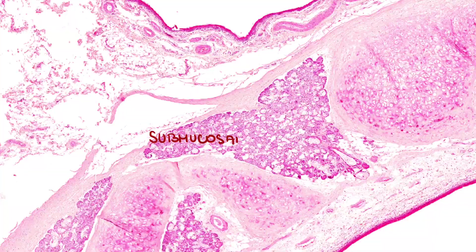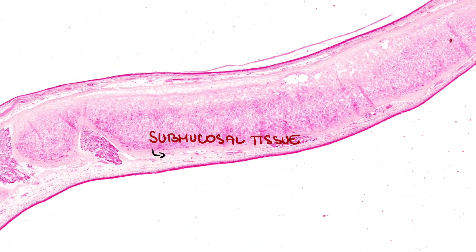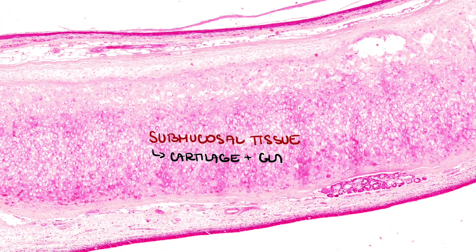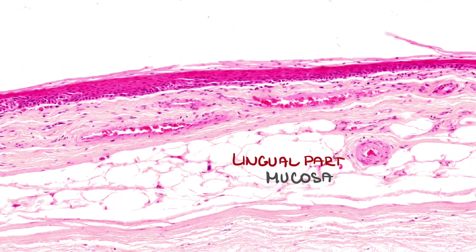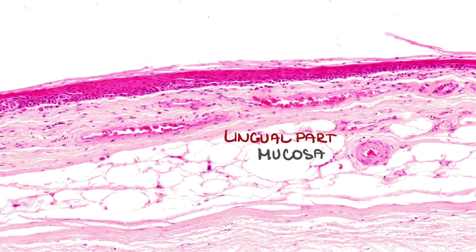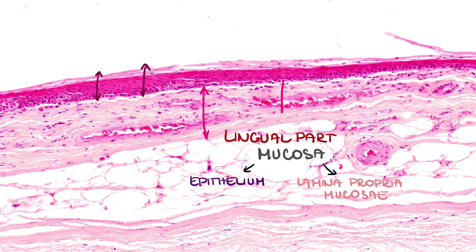The mucosal tissue that comprises cartilage and glands is covered with mucosa on both sides. Let's have a look at the lingual part. This is mucosa, which consists of epithelium and lamina propria mucosae. Epithelium on the lingual side is stratified squamous non-keratinizing epithelium.